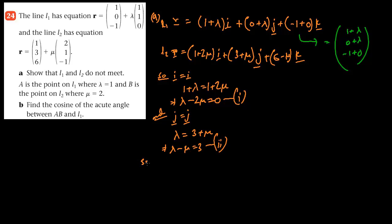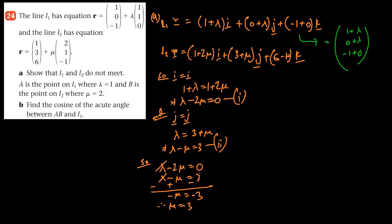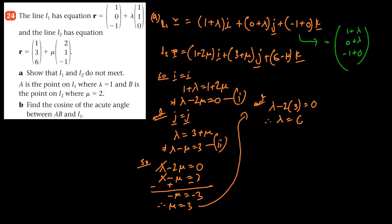Let's solve this. λ − 2μ = 0 and λ − μ = 3. Subtracting to cancel lambda: −μ = −3, therefore μ = 3. Once we know μ, we can find λ. Putting μ = 3 into λ − 2μ = 0, therefore λ = 6.